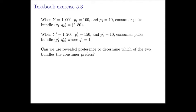The first scenario is where the consumer has $1,000, the price of good one is $100, and the price of good two is $10. The consumer in this case picks the bundle (2, 80) - two units of good one, 80 units of good two.